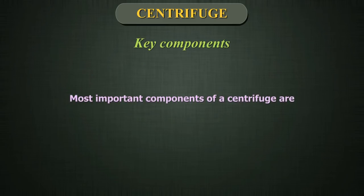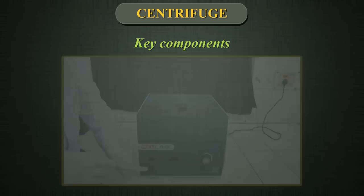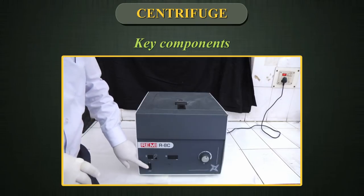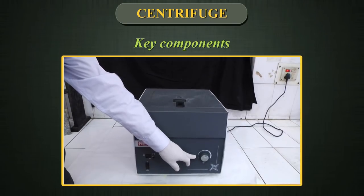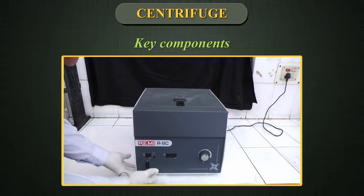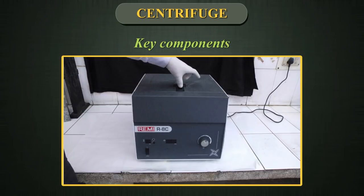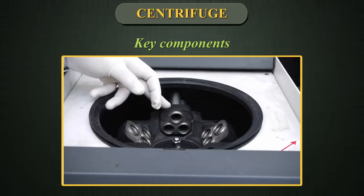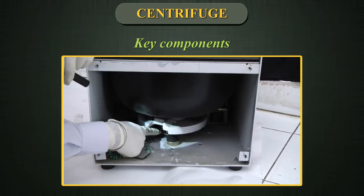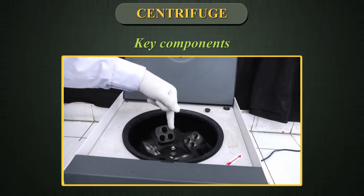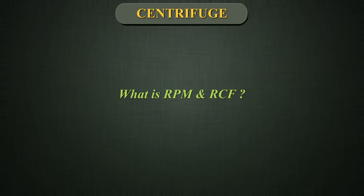The key components of a centrifuge are the on/off control, operation time control (the timer), rotation speed control, base, lid cover with lid interlock, casing, safety bucket, tube holders, electric motor, and rotor.